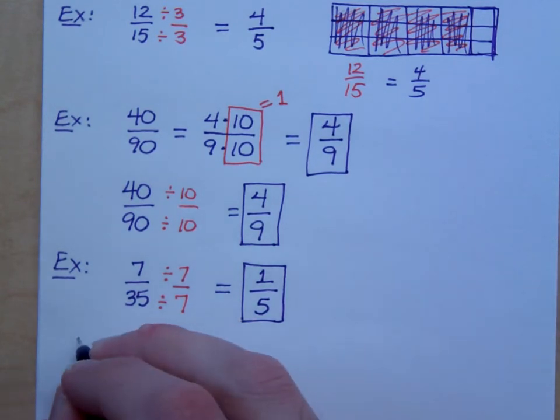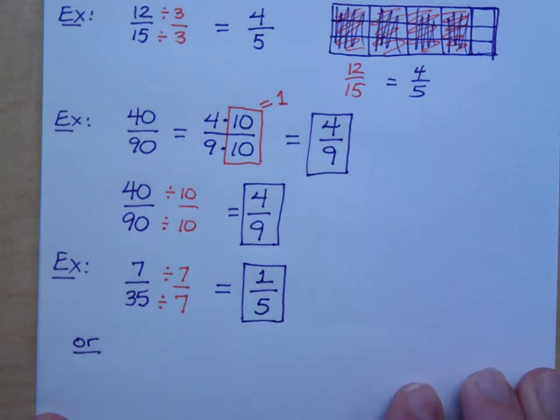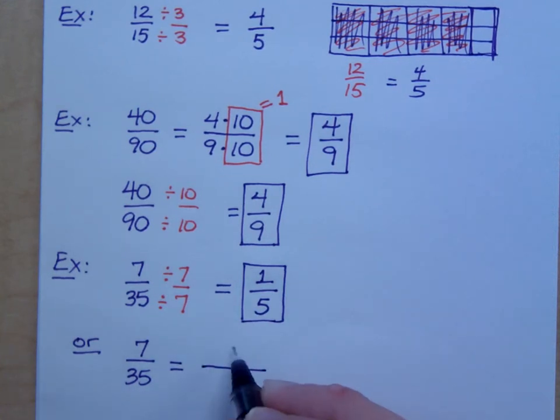Now, let me show you the alternative way of working this problem. Look at this in terms of prime factors. 7 is just 7, right? Because 7 is a prime number.